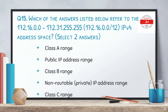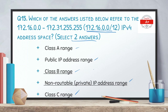Question number 15: which of the following answers refers to the 172.16.0.0–172.31.255.255 (or 172.16.0.0/12) IPv4 address space? We have to select two answers. The options are class A range, public IP address range, class B range, non-routable private IP range, and class C range. The correct answers are that this is class B range and, just like the previous question, this address space is also private and non-routable over the internet.